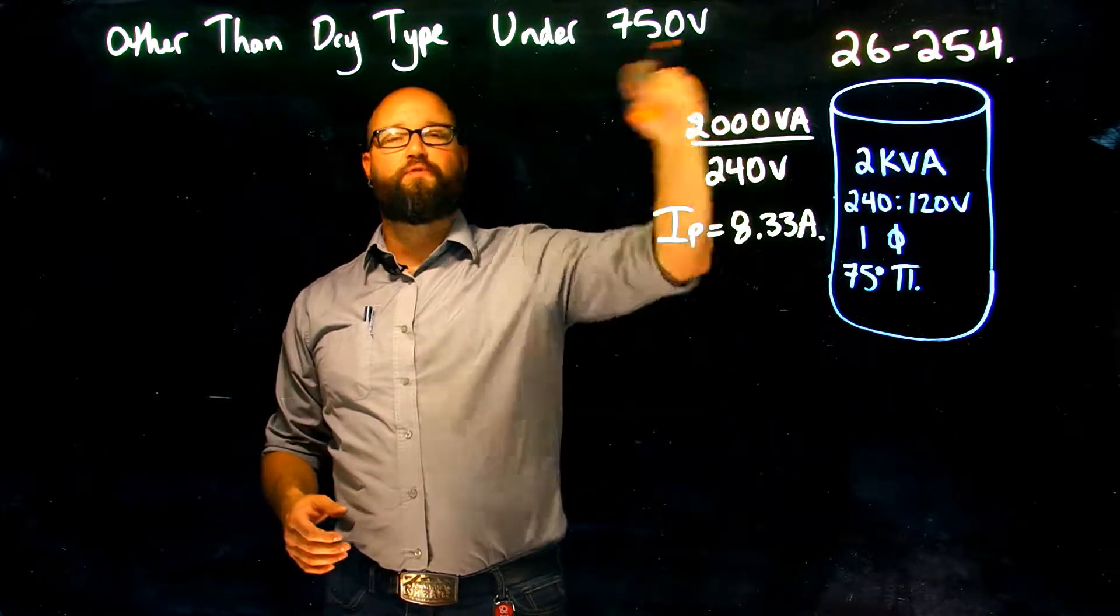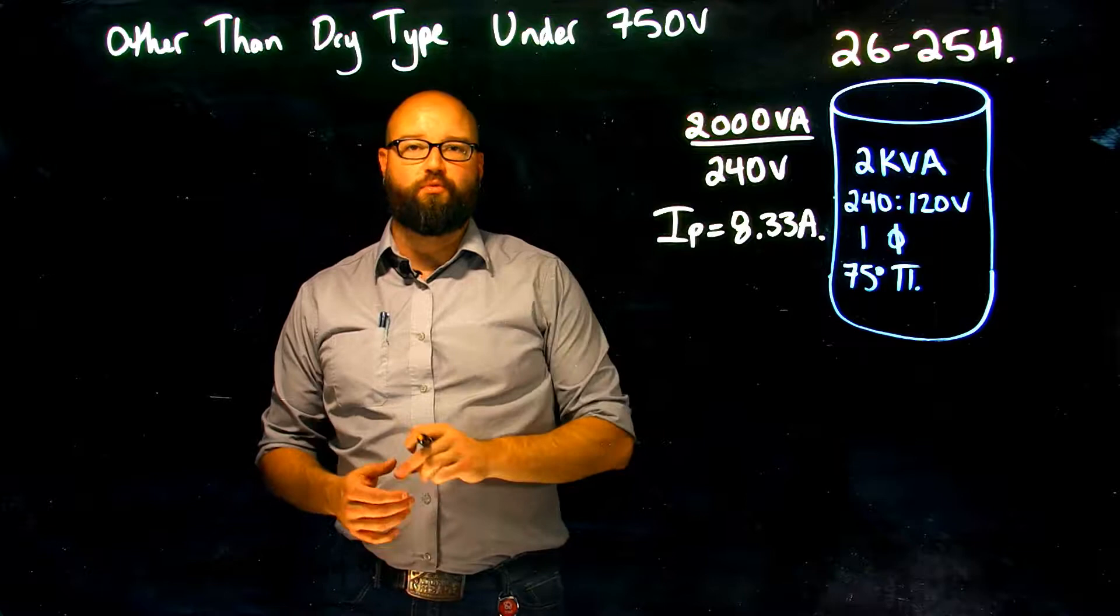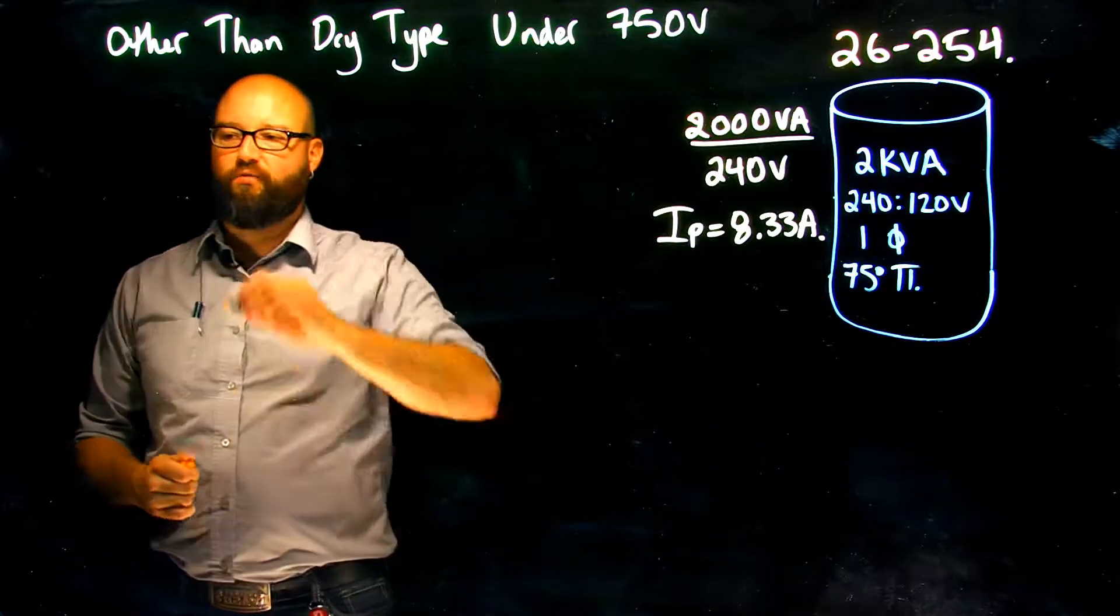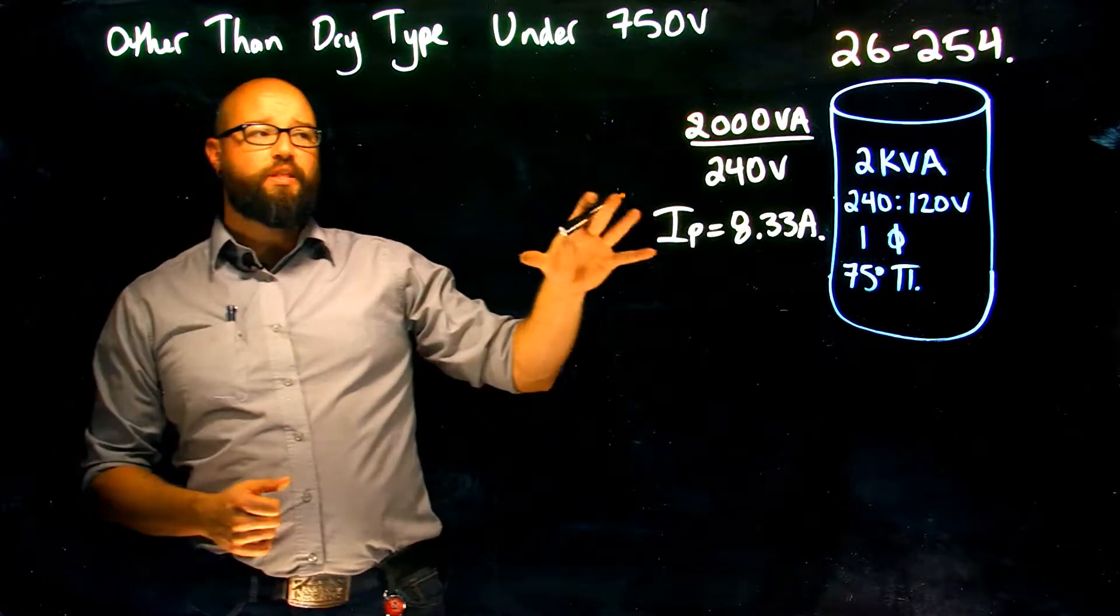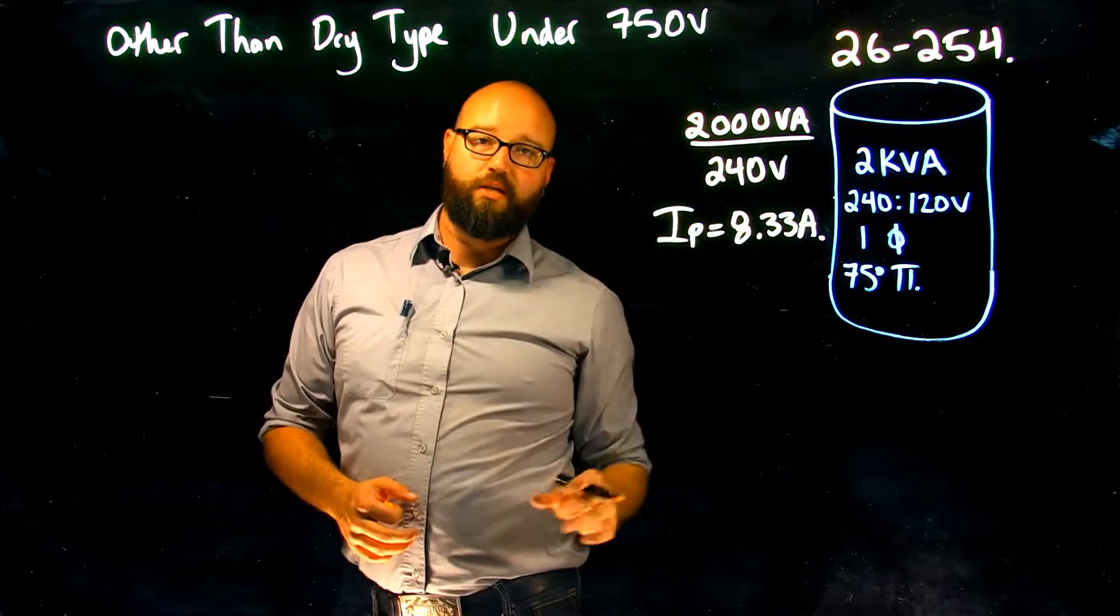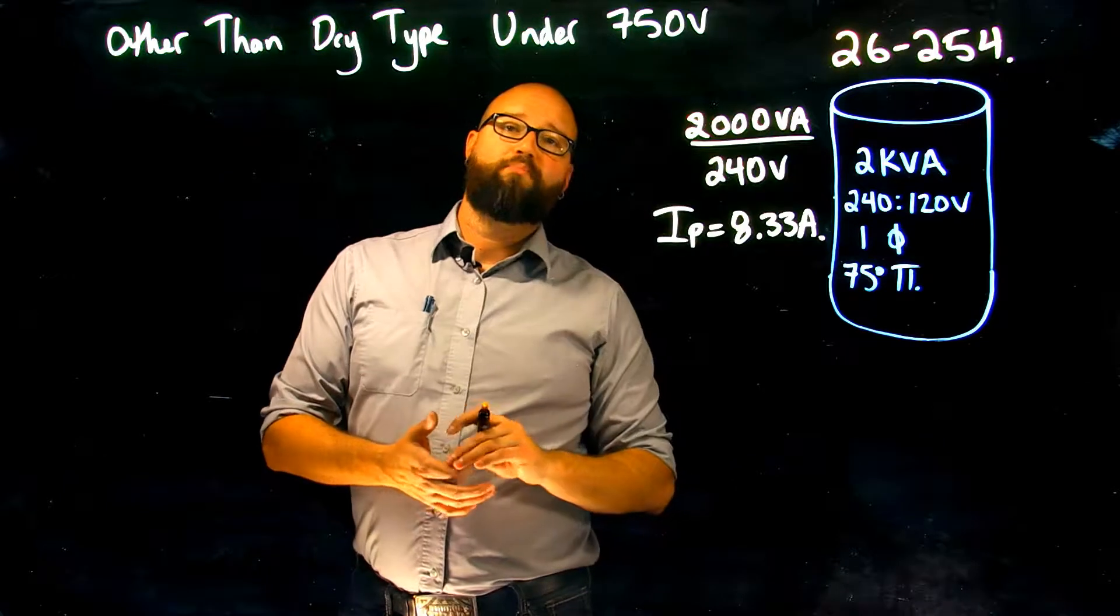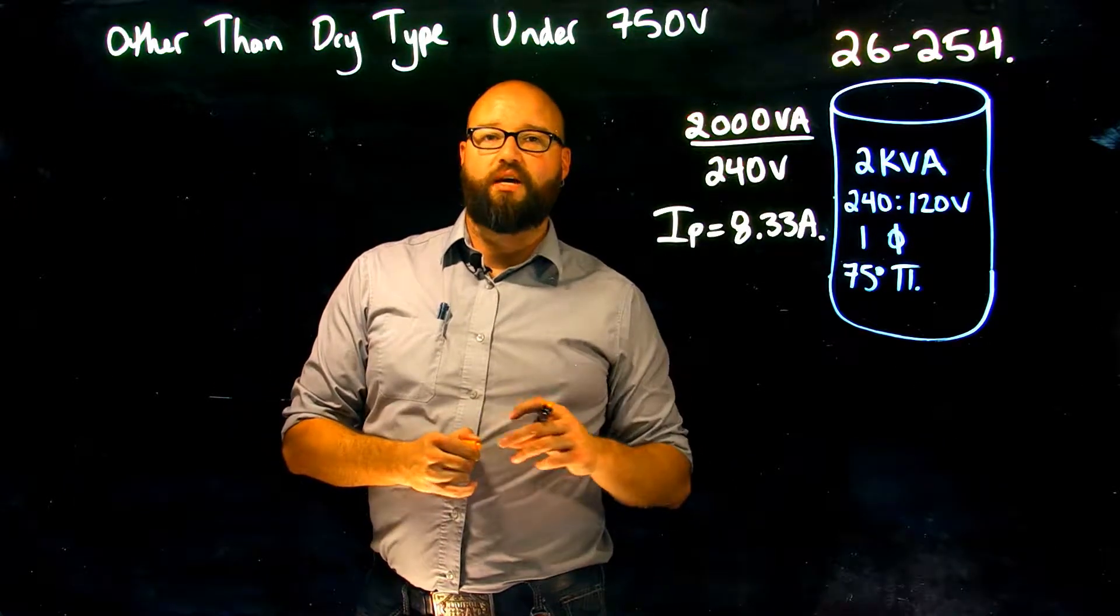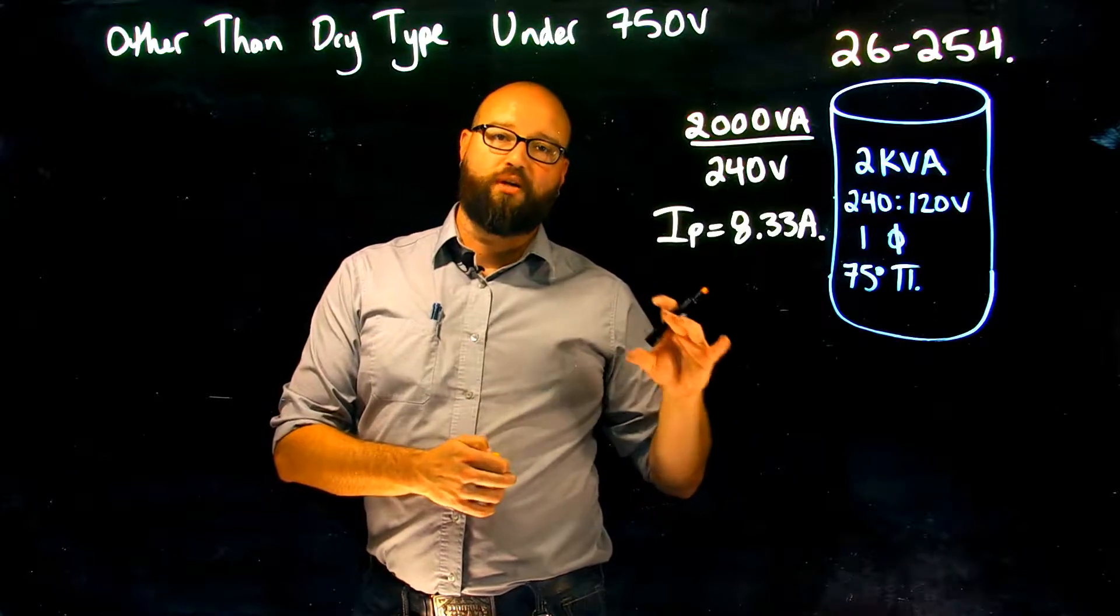We need to do a little bit of reading in 26-254, which is our reference for this calculation. There's a couple of things. If we look at 26-254, it tells me that if I have a rated primary current, sub rule one says for a rated primary current, we're going to take 150 percent of that rated primary current and choose an overcurrent rated or set at not more than that value.